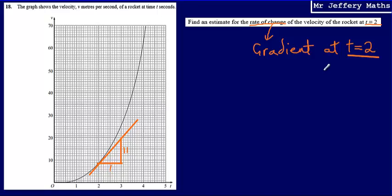So then my final answer here is find an estimate for the rate of change. That is simply going to be, so 11 is our gradient. Our gradient is 11. And so our final answer is going to be 11. The rate of change of the velocity of the rocket at t equals 2 is 11.